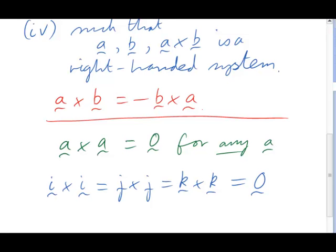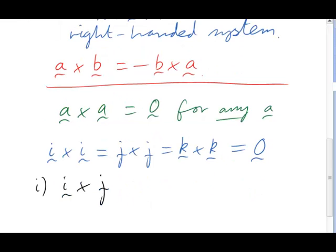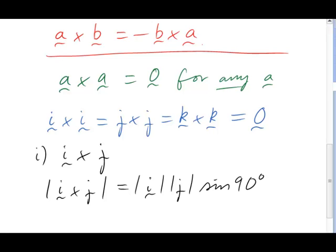Let's start with the mixed ones. What about i cross j? It's going to be a vector, but let's begin by talking about its magnitude. Its magnitude must be the length of i times the length of j times the sine of the angle between i and j.